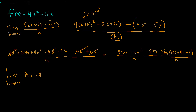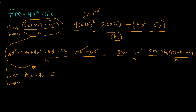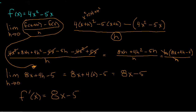Now that h will cancel. I'm ready to find the limit as h approaches 0 of 8x plus 4h minus 5. Through a whole bunch of solid algebra I was able to get here, and now I'm ready to plug in 0 for h. Plugging in 0 for h gives 8x plus 4 times 0 minus 5, and 4 times 0 is nothing. So my final answer is 8x minus 5. The derivative f prime of x of my function is 8x minus 5.